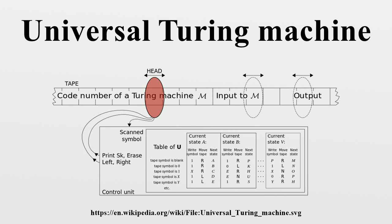Finally, the codes for all four five-tuples are strung together into a code, started by a separator and separated by semicolons.